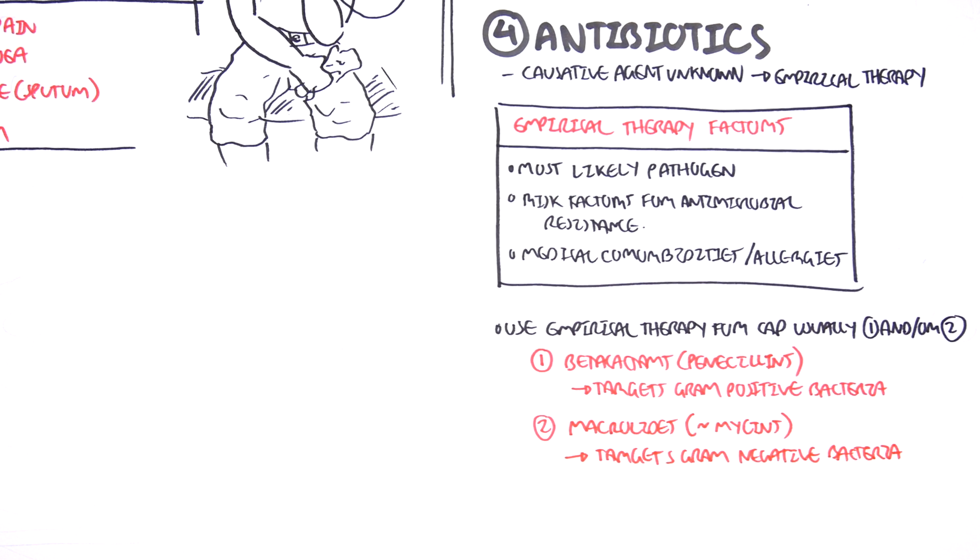Of course, this is simplistic in that macrolides can also target your gram-positive. But essentially what you're doing with empirical therapy is that you are trying to cover the most likely causative agent, being the bacteria.